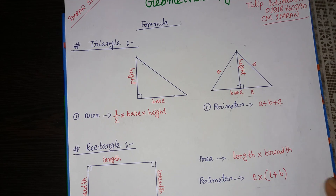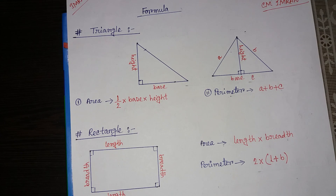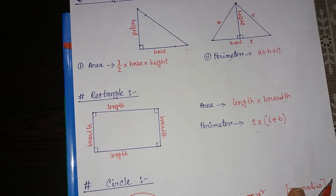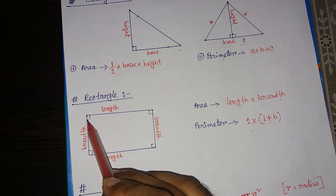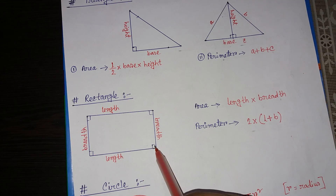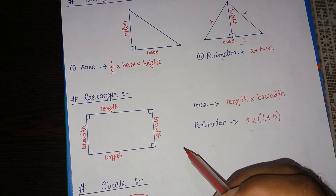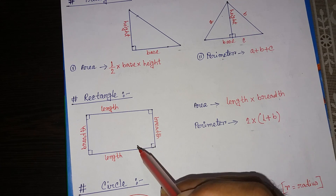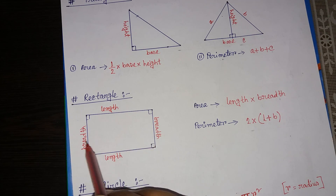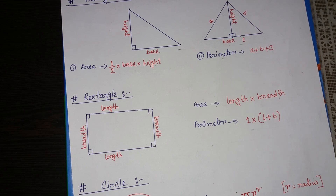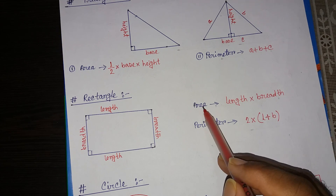The next formula is about the rectangle. The properties of a rectangle are: every angle is a right angle — this angle, this one, this one, and this one are all right angles. Opposite sides are congruent, opposite sides are parallel — this side and this side, and this line and this line are parallel.